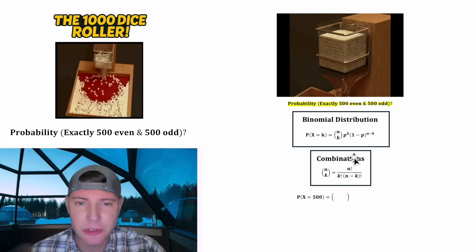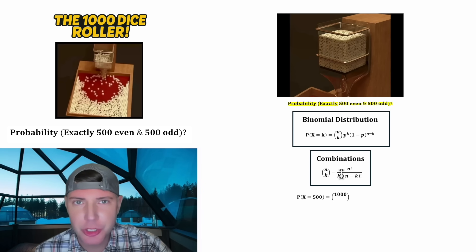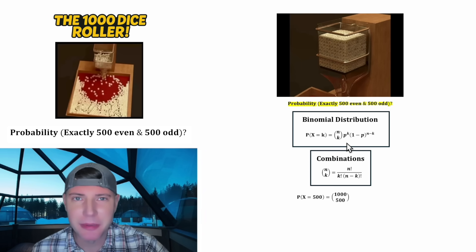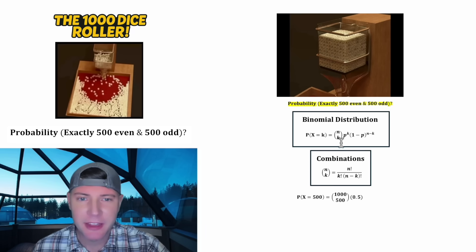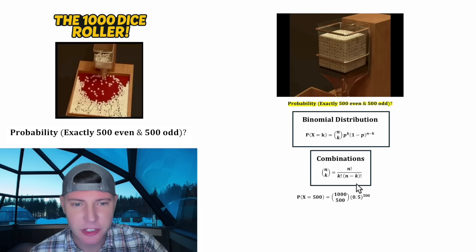That's going to be equal to the total number of dice — 1,000 — choose the number of even dice that we want, 500. So we say 1,000 choose 500. And p is the probability of getting one even die, which is 0.5. And k is the number of even dice that we want, so that's going to be 500.